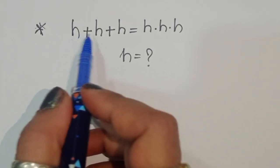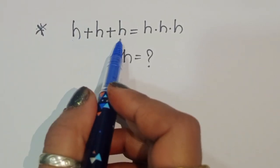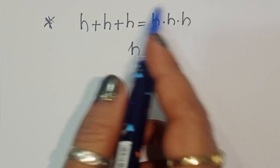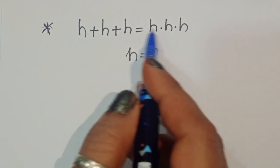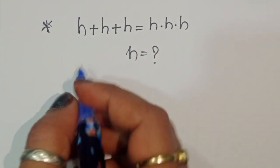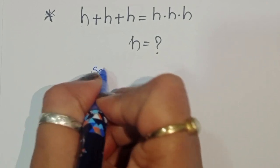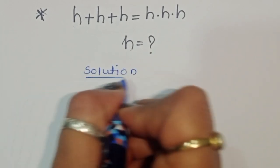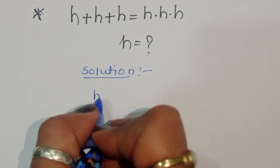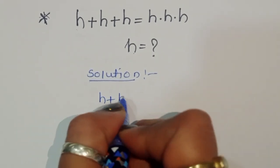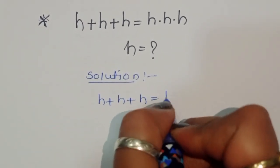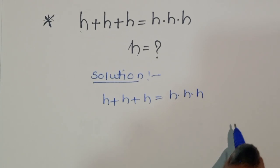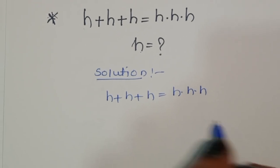The question is: given h plus h plus h is equal to h times h times h, we have to find out the value of h. Let's look at the solution. h plus h plus h is equal to h times h times h.